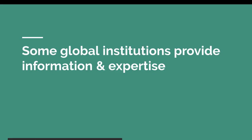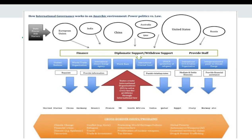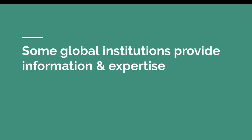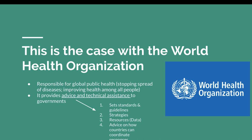Some global institutions provide information and expertise. Institutions like the World Health Organization and the Intergovernmental Panel on Climate Change employ people from across the world who are experts in these global issues, so that when governments experience problems — whether with climate change or disease — they can go to these organizations and ask for advice on strategy.